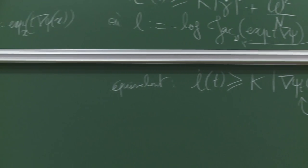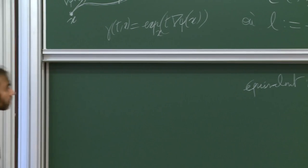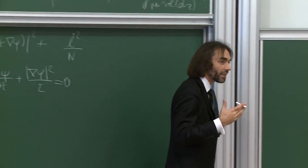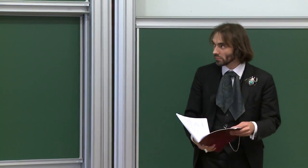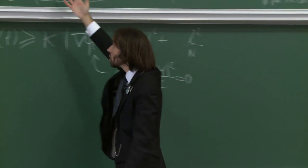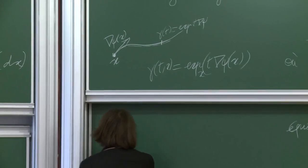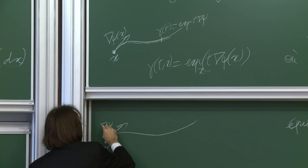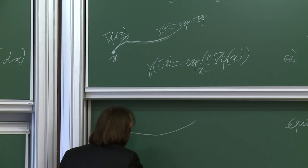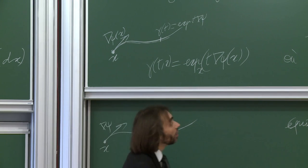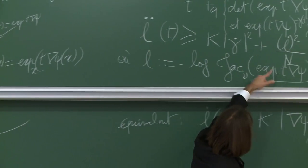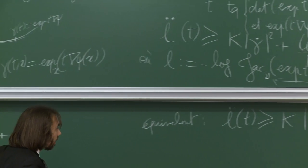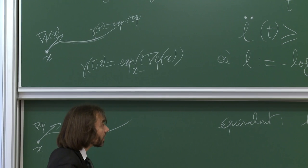Plus généralement, ces inégalités jacobiennes permettent de comparer le déterminant jacobien de l'exponentielle avec celui sur une variété de référence. Troisième propriété équivalente : une inégalité fonctionnelle à la Bochner, du type Δ(|∇ψ|²/2) − ∇ψ · ∇(Δψ) ≥ K|∇ψ|² + (Lψ)²/N, où L = Δ − ∇V · ∇.